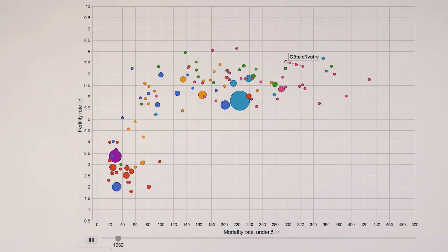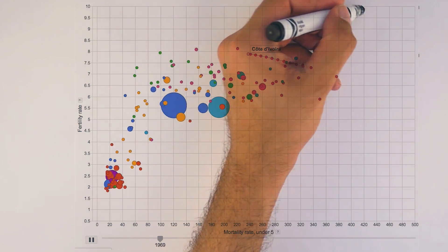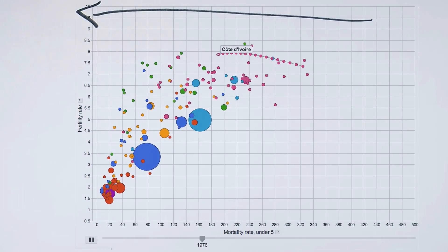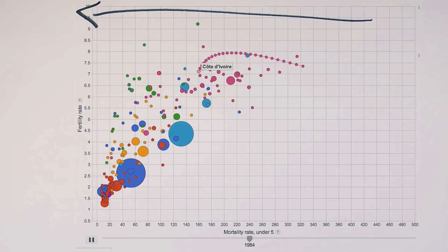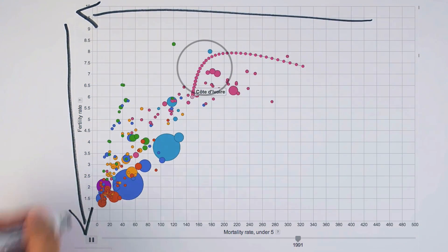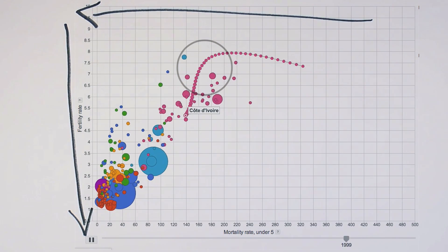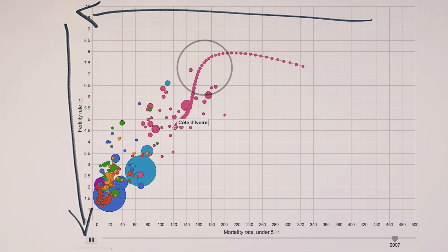Look at Cote d'Ivoire. From the 60s until 1980, fertility rates remained high as under-5 mortality was coming down. But then suddenly, as soon as more children started living past their 5th birthday, you see fertility rates dropping well below the regional average.